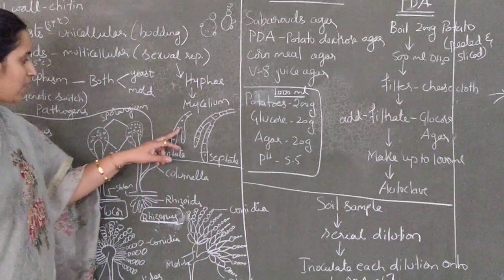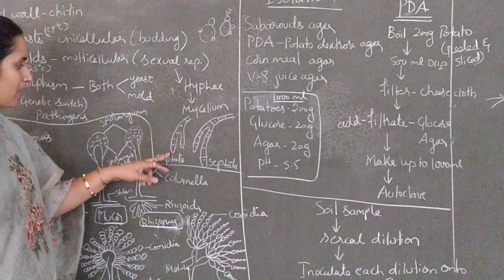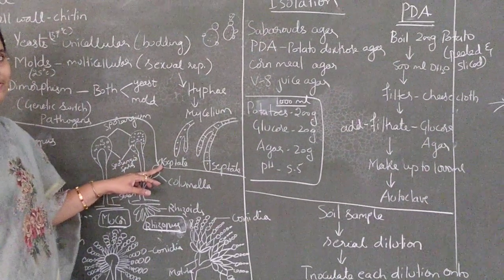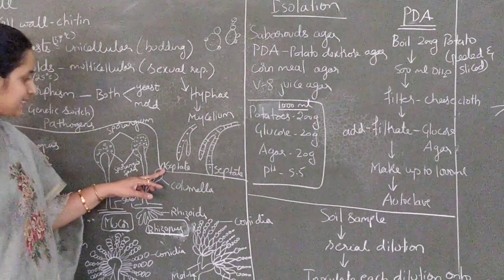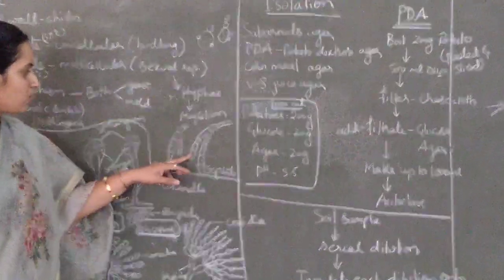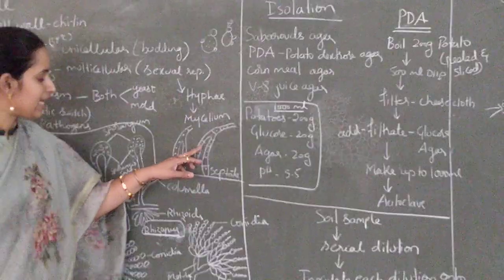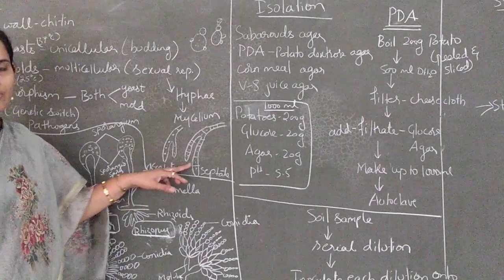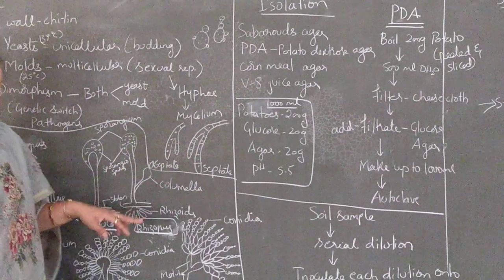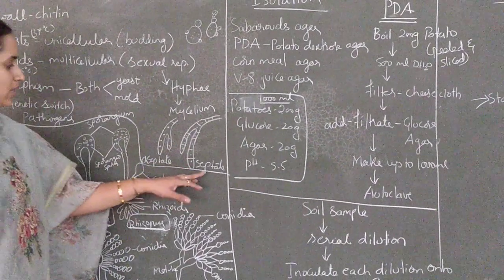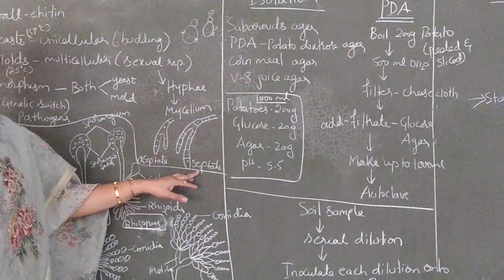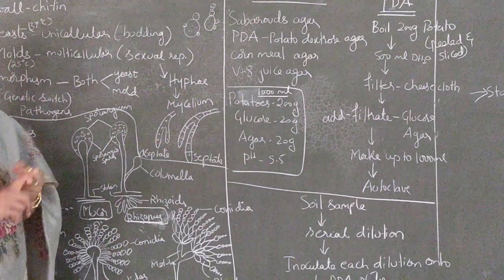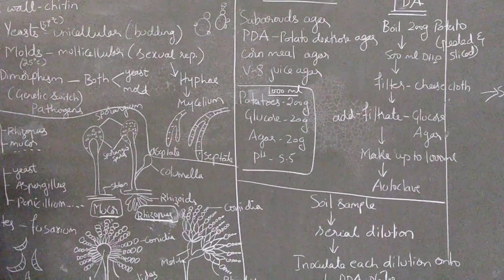In aseptate hyphae, the wall has not been divided into different cells. Whereas in septate hyphae, each cell has been divided by a common cell wall. So hyphae is of two types: aseptate and septate.